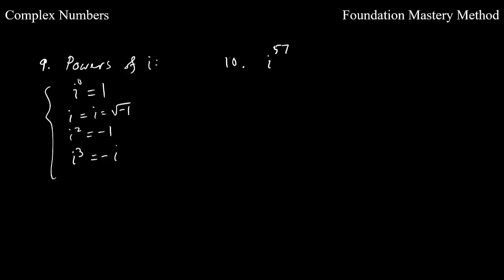We'll check with more examples. Suppose we want to determine the value of i to the 57. So the idea is like you divide 57 by 4 and see what is the remainder. So you know that if you divide it one time, you get a 4 here. 70, you get 4 times. And your remainder is 1. So that means this one is same as i to the 1, which is just i.